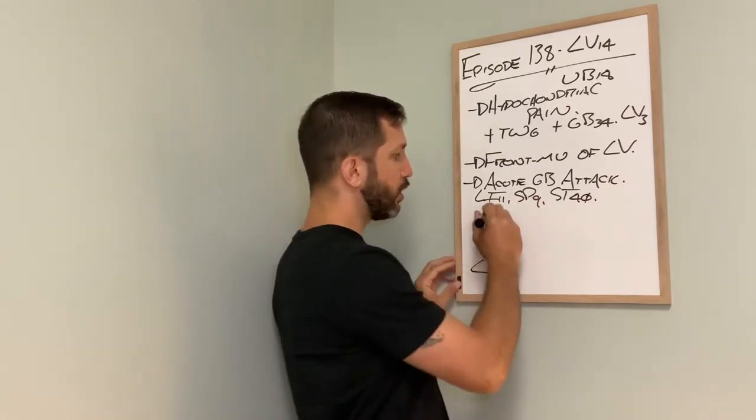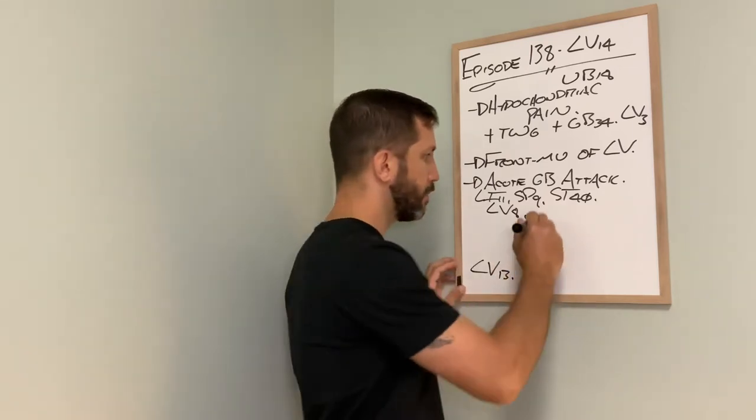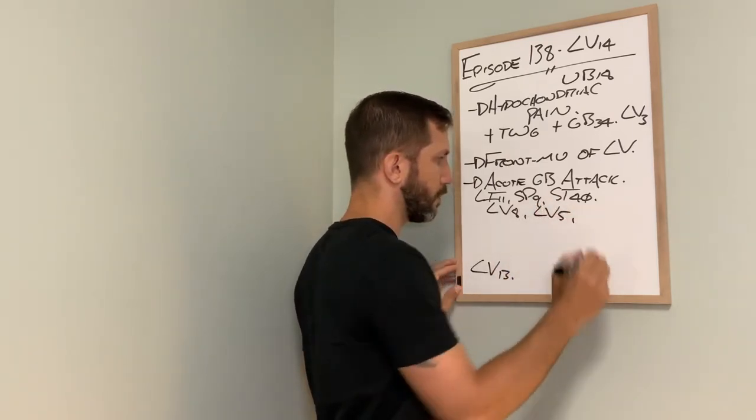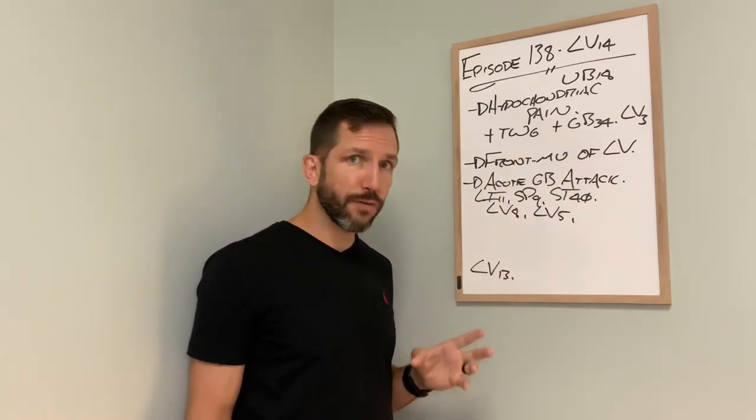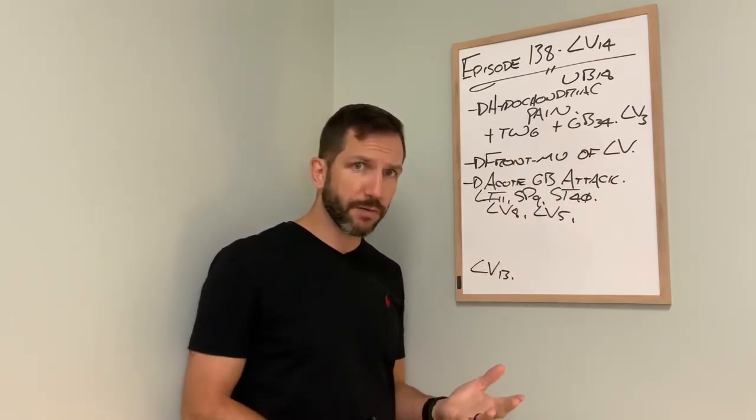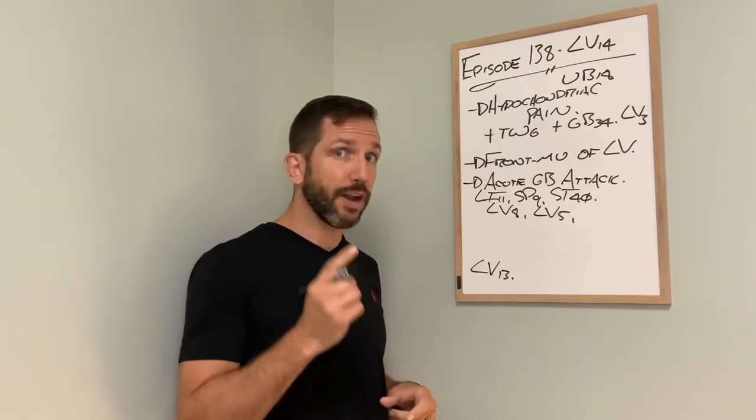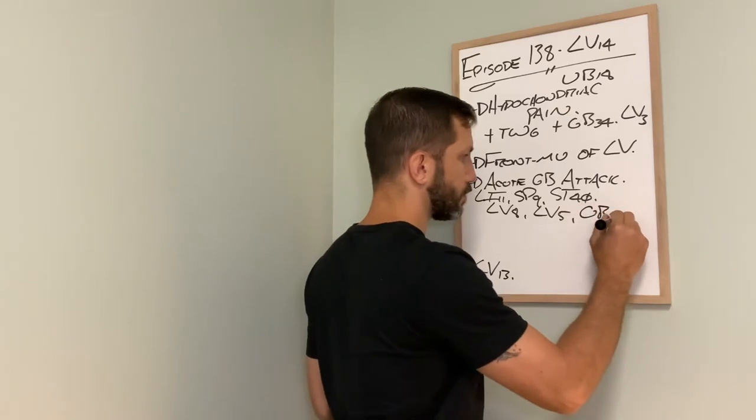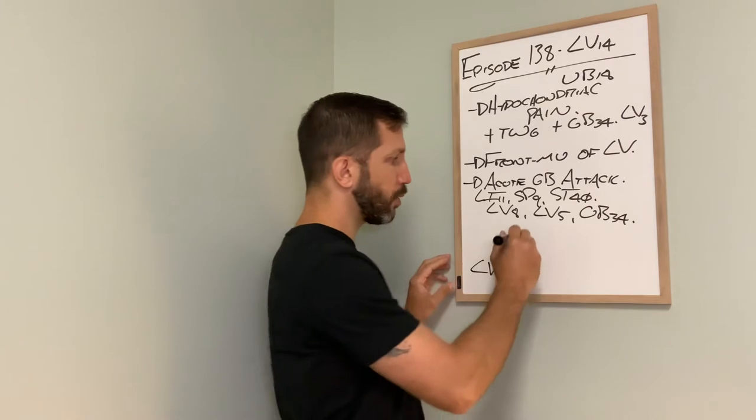We're going to help that liver and gallbladder out. We're going to do liver 8, which is a HE C. We're going to do liver 5 connecting. And, of course, we could do GB34, a HE C, influential of tendon, but it also helps drain damp heat from the liver and gallbladder.